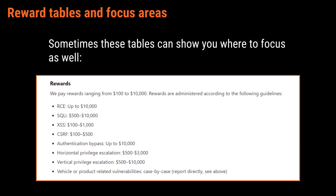Each program might also have unique areas of the brief, such as reward tables and focus areas. These tables show you where to focus most for each individual client. For instance, the types of bugs Tesla cares about most on their bounty brief include remote code execution, SQL injection, cross-site scripting, CSRF, and a host of other bugs — these are the ones that will get triaged the quickest and paid out the best.